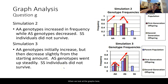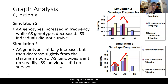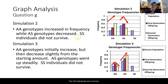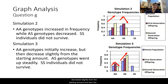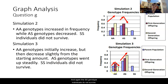Looking at the graphs for question G, comparing simulations two and three: in simulation two, AA genotypes increased in frequency while AS genotypes decreased, and SS individuals don't survive. In simulation three, AA genotypes increased but then decreased slightly from the starting amount, while AS genotypes go up steadily. Again, SS genotype individuals do not survive in either simulation.